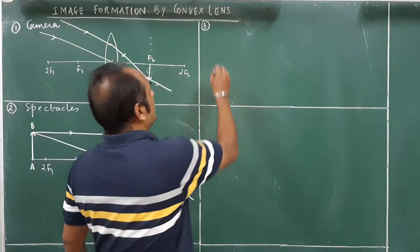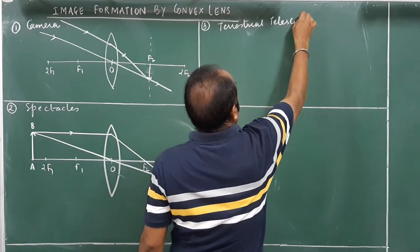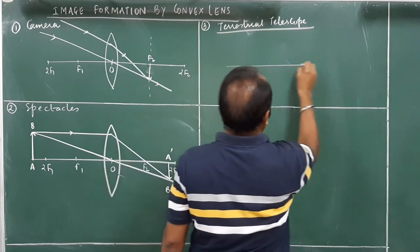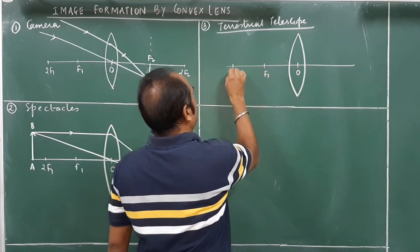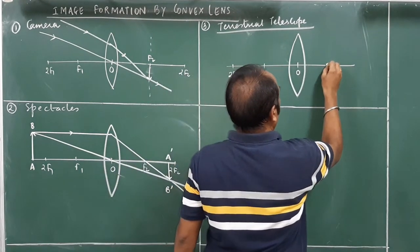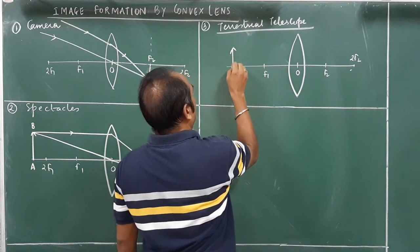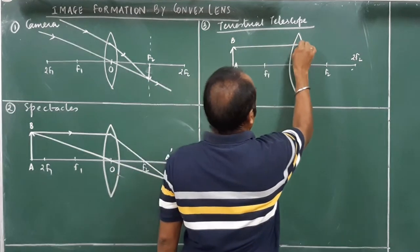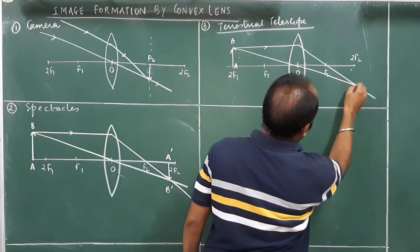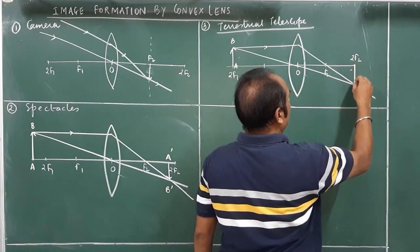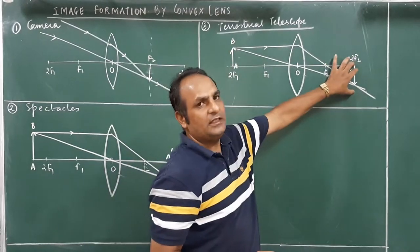The third case is how a convex lens can be used in a terrestrial telescope. Here we have a lens and the object is placed at 2f1. A ray parallel to the principal axis passes through the focus, and another ray from the optical centre goes undeviated. Both rays meet at 2f2. So when the object is at 2f1, the image is formed at 2f2.